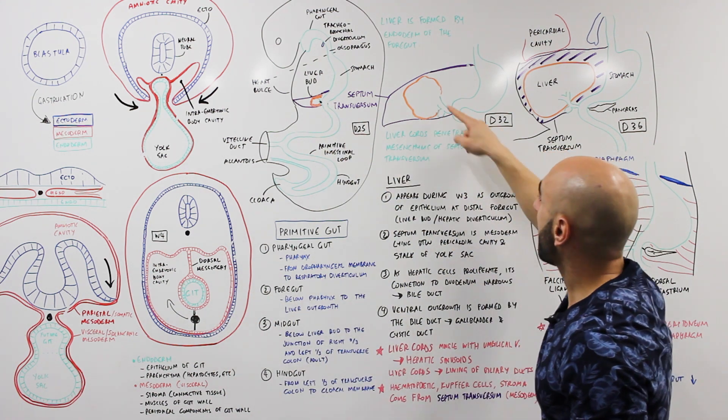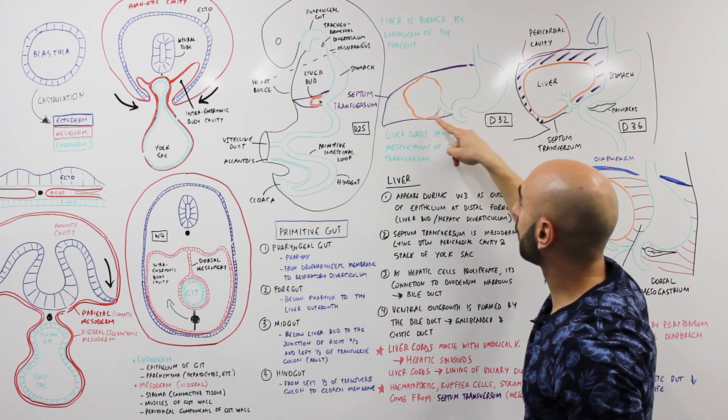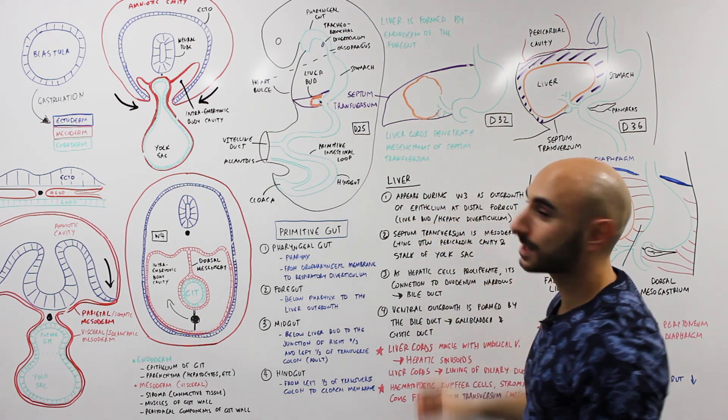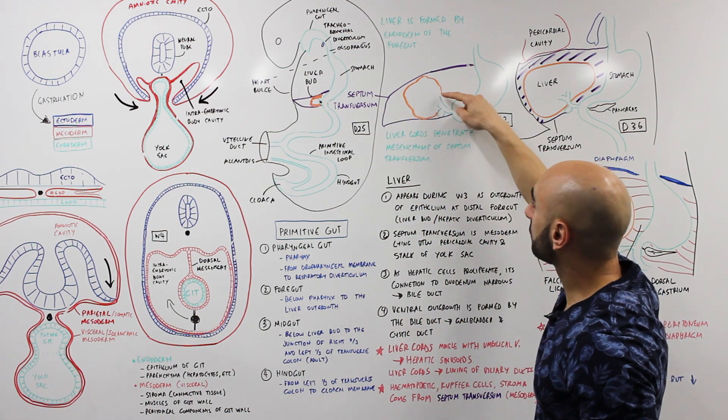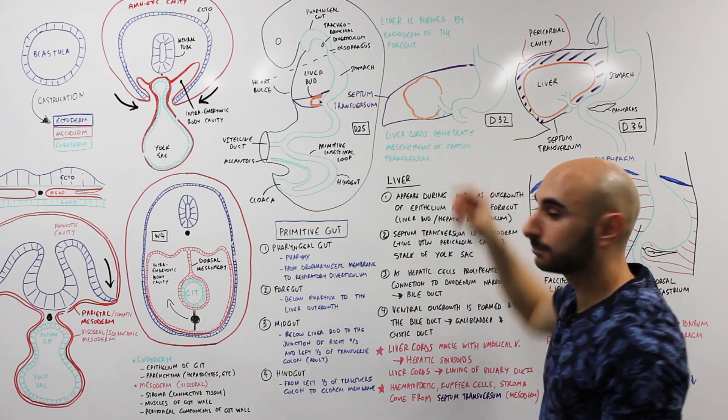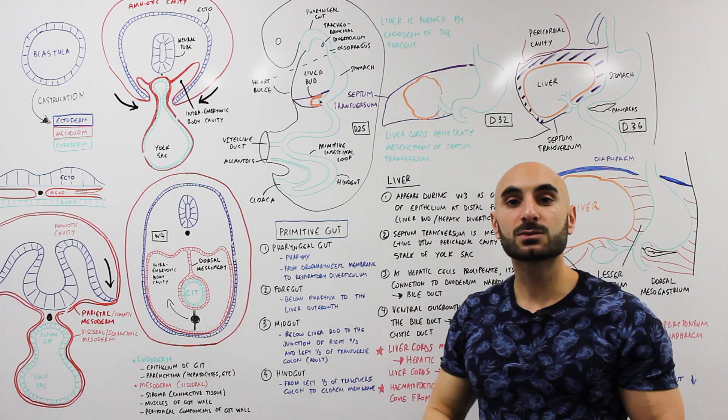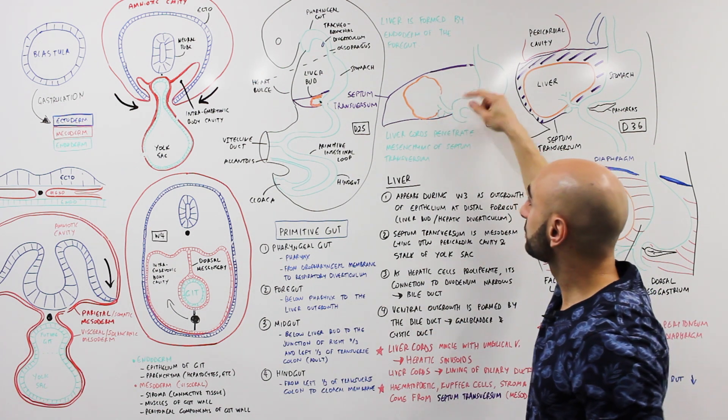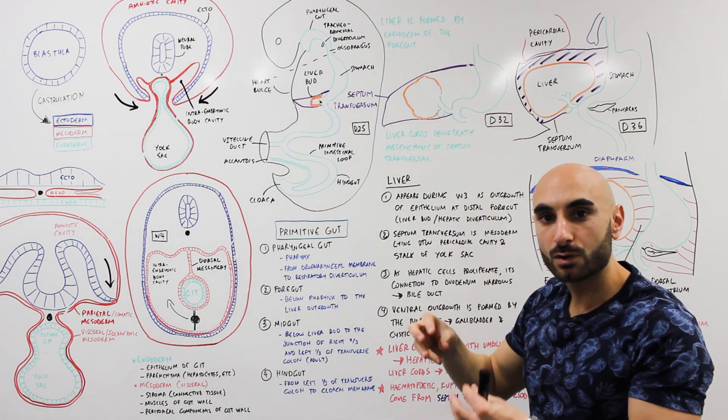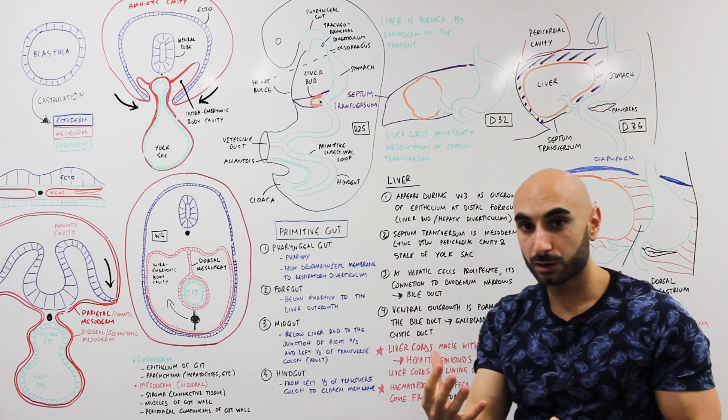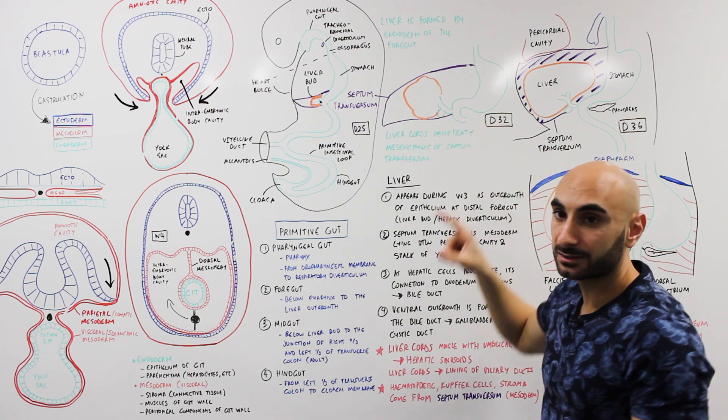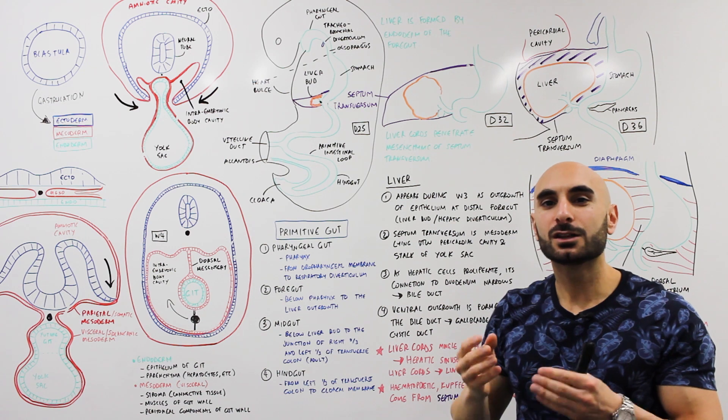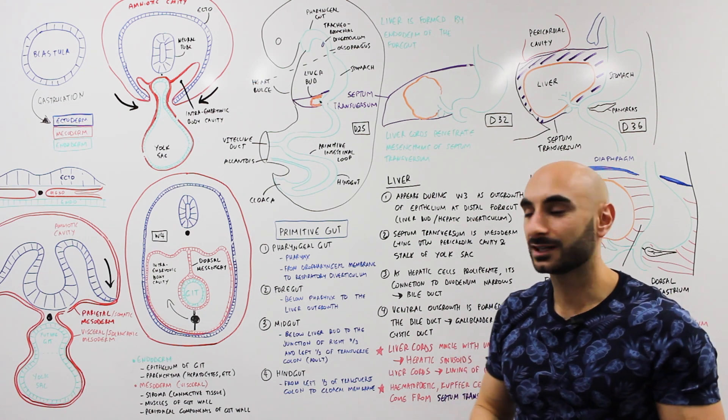If we look on day 32, as the liver bud grows into the septum transversum, the connection of the liver to the duodenum becomes narrow and this is what will become the bile duct. As the liver grows and the bile duct narrows, a ventral growth will appear on the bile duct which will eventually be the gallbladder and the cystic duct.